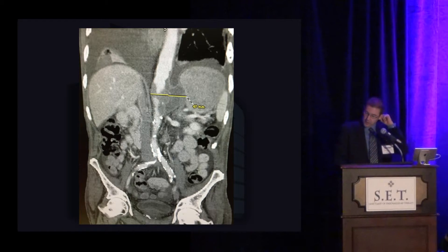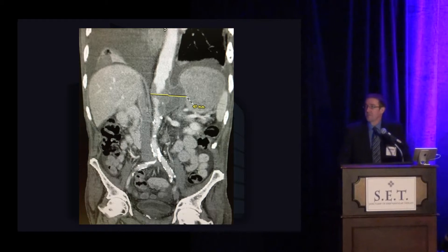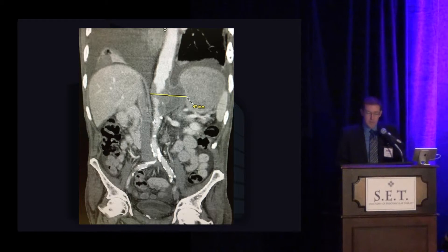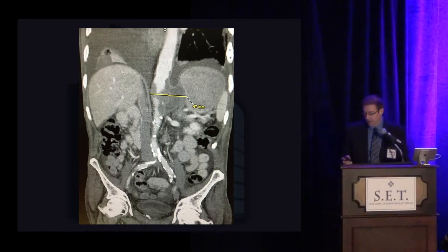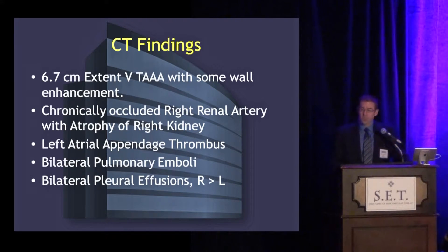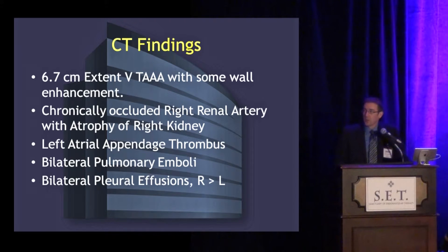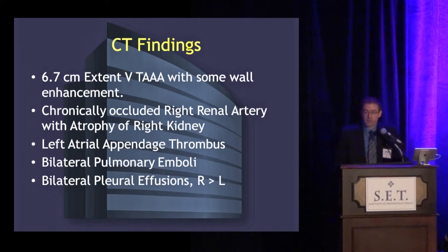I was sent this picture Saturday morning from the surgeon at the outside institution on my phone, saying can you take this patient and transfer — he's got a mycotic aneurysm. On the CT scan, you can see a number of findings: an extent 5 TAA with some wall enhancement, a chronically occluded right renal artery with atrophy of the right kidney, some left atrial appendage thrombus, bilateral PE, and large bilateral pleural effusions, right greater than left.